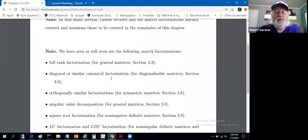Diagonal or similar canonical factorization for diagonalizable matrices. So there were some constraints on the diagonalizability and that was a bit of a story. It was in section 3.8, that was the very lengthy section on eigenvalues.